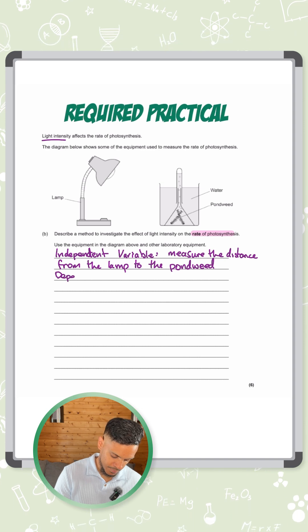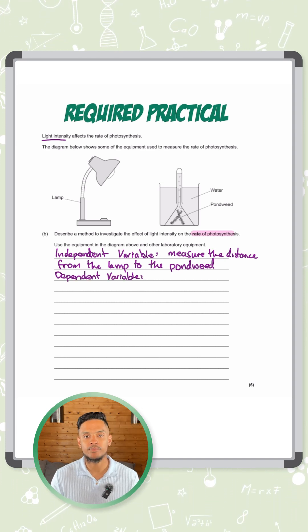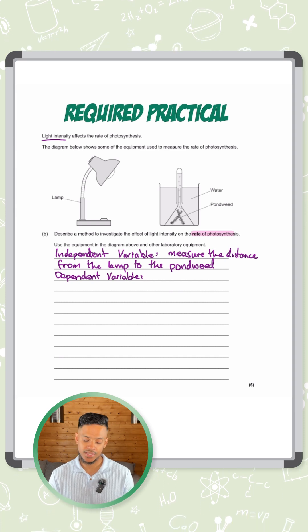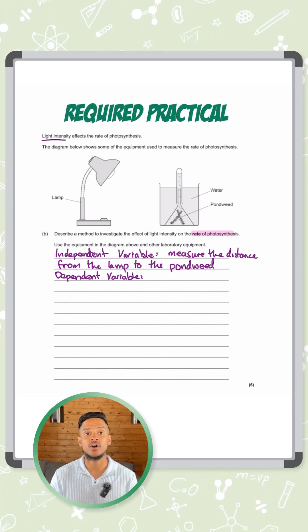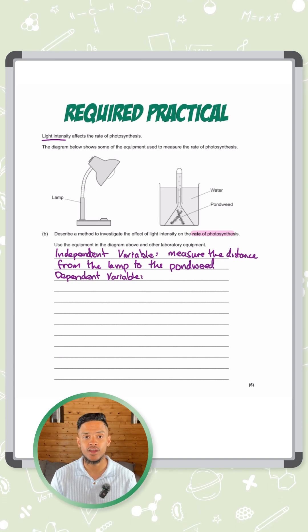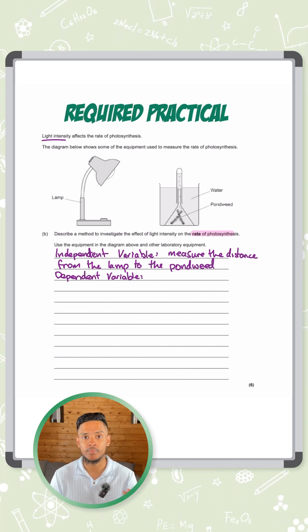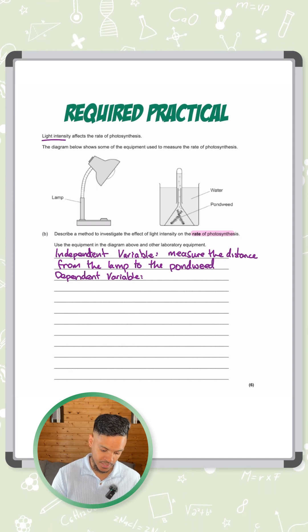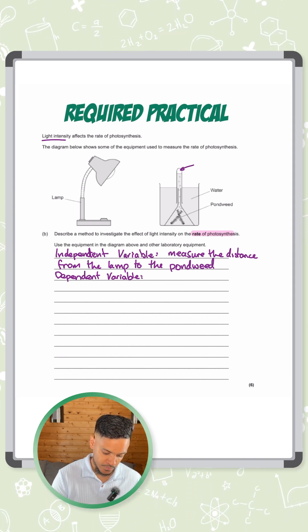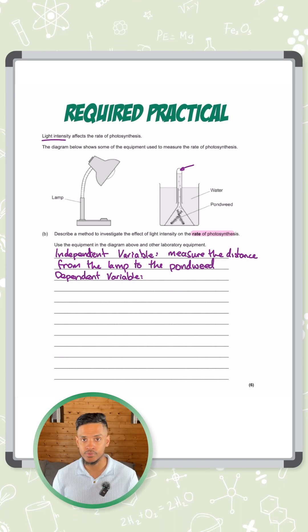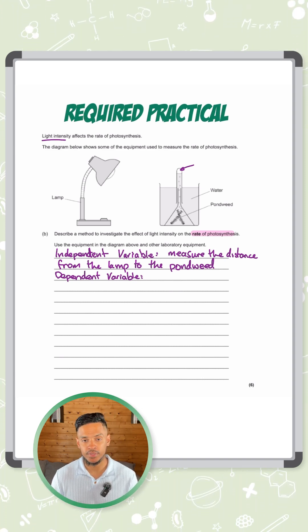What are we measuring? The dependent variable. We have bubbles of oxygen being given off by the pondweed. The amount of oxygen given off is an indication of how fast the photosynthesis is occurring. The more bubbles you get per minute, the faster it's happening. You can do it two ways. You can either measure the volume of gas picked up at the top of the test tube or you can literally count the bubbles being given off by the pondweed.